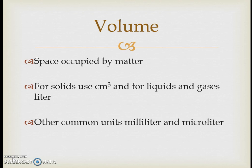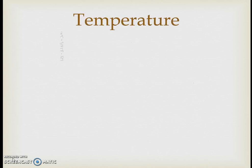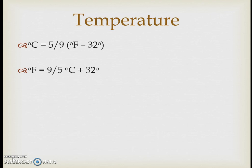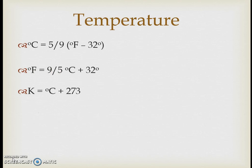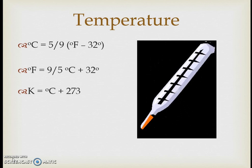Other common volume units include the milliliter and microliter for very small amounts. For temperature, converting between Fahrenheit and Celsius involves subtracting 32 and multiplying by five-ninths. To go from Celsius to Fahrenheit, multiply by five-ninths and then add 32. Most commonly in chemistry we convert Celsius to Kelvin by simply adding 273, or subtract 273 to go from Kelvin back to Celsius. Note that it is just 'kelvin' — not 'degrees kelvin.'